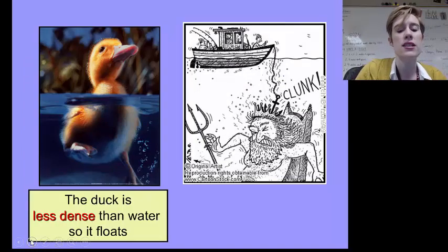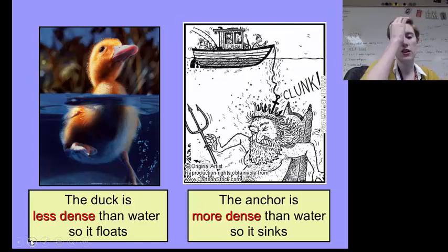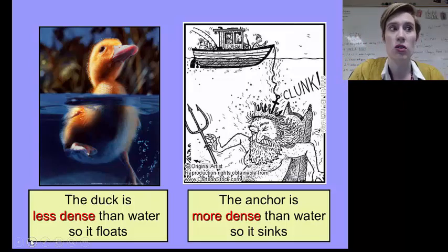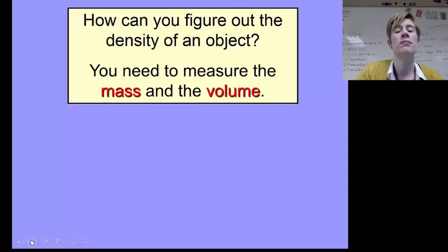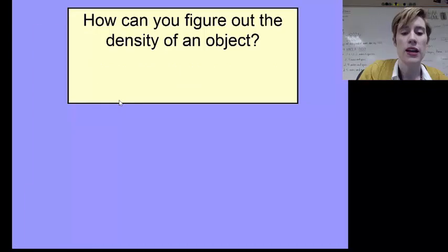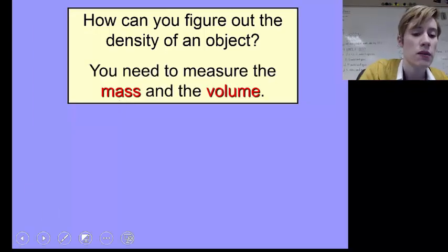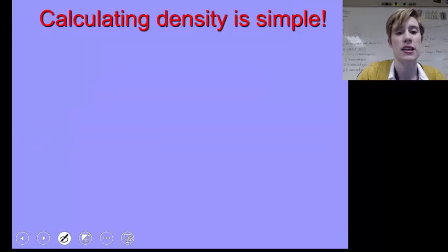These two pictures just say the duck is less dense than the water, so it floats, and then here it says the anchor is more dense than water, so it sinks. So what happens if we can't look at the molecules, which we normally can't if I don't give you a diagram? If I'm just looking at a duck or looking at an anchor, how can I mathematically figure out whether it will be denser than water?